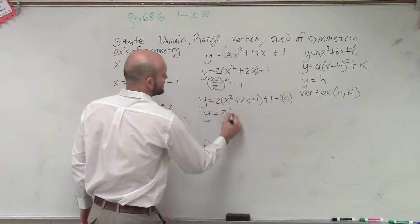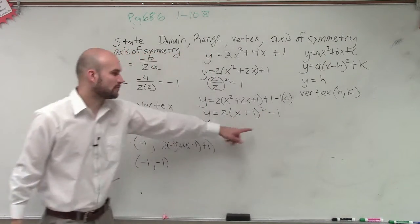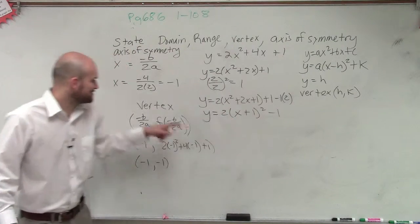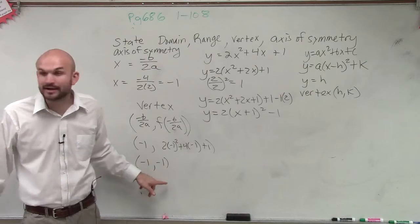Therefore, y equals, now you factor that, 2 times x plus 1 squared minus 1. Therefore, you guys can now see that the axis of symmetry is negative 1, and the vertex is negative 1, negative 1.